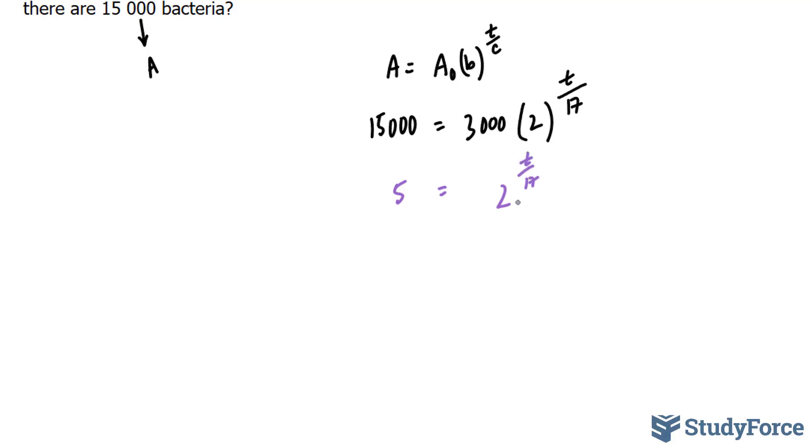Now the only way to isolate for t in this situation is to ln both sides. Because by ln-ing both sides, we can use the rules of logarithms, specifically the power rule, that will bring this t over 17 to the front. Let me show you.